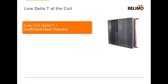When we're talking about delta T we're really talking about delta T at the coil. What we're referring to is the difference between the supply water temperature which enters the coil and the return water temperature that leaves the coil. When it's low it means that I have not exchanged a whole lot of BTUs into this space, or more accurately haven't transferred enough heat into that water.